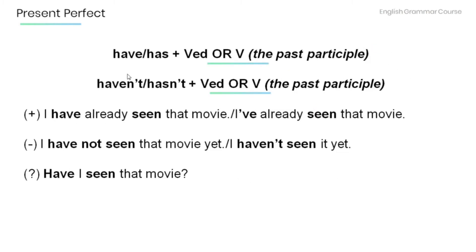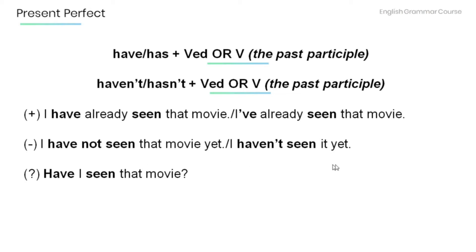We use have or has plus the past participle (verb-ed or irregular verb form). For the negative we use haven't or hasn't plus the past participle. For example, positive: I have already seen that movie — I've already seen that movie. Negative: I have not seen that movie yet — I haven't seen it yet.